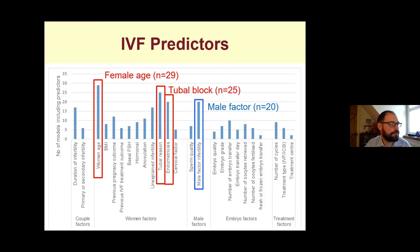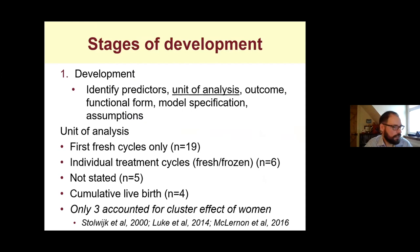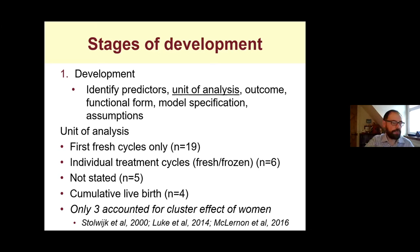Another important consideration is the unit of analysis. In our systematic review, 19 studies looked at prediction from the first fresh IVF cycle only, ignoring subsequent frozen and fresh cycles. Six studies looked at individual treatment cycles, considering fresh and frozen. Five didn't state the unit of analysis. Four looked at cumulative live birth — the probability of having a baby after up to two or three cycles. Only three of the 35 models accounted for the clustering effect of women having multiple cycles, which is important to avoid falsely precise predictions.